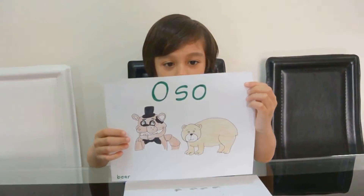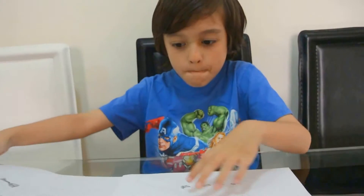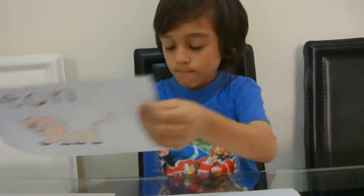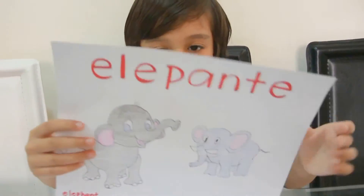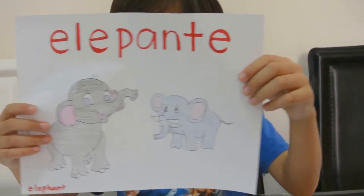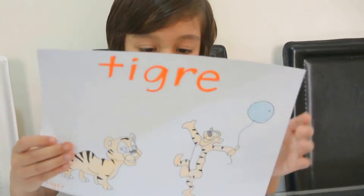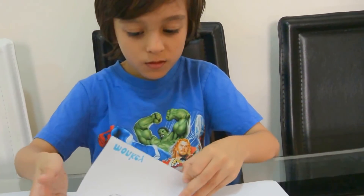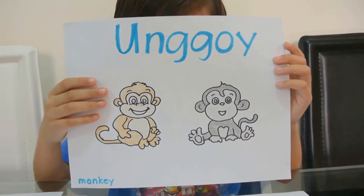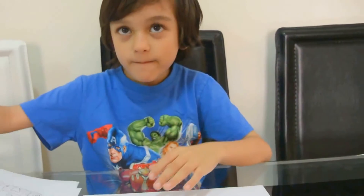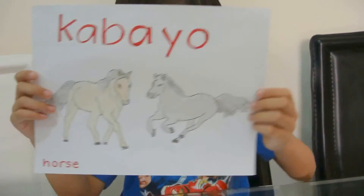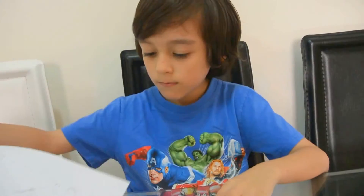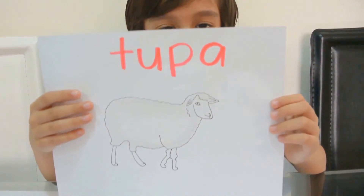Now let's repeat. Also Leo is bear. Leon is lion. Elepante is elephant. Tigre is tiger. Ungoi is monkey. Caballo is horse. Cambing is goat. Tupac is sheep.